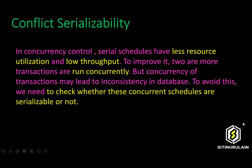This lecture will be solving problems in conflict serializability. In concurrency control, serial schedules have less resource utilization and low throughput. To improve it, two or more transactions are run concurrently. But concurrency of transactions may lead to inconsistency in the database. To avoid this, we need to check whether these concurrent schedules are serializable or not.